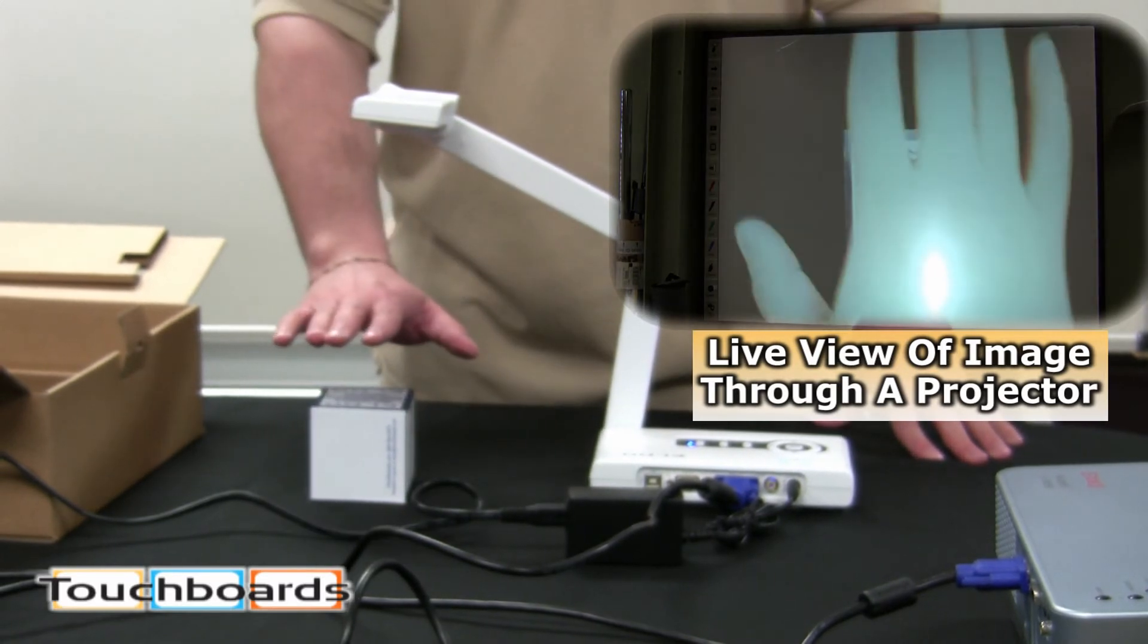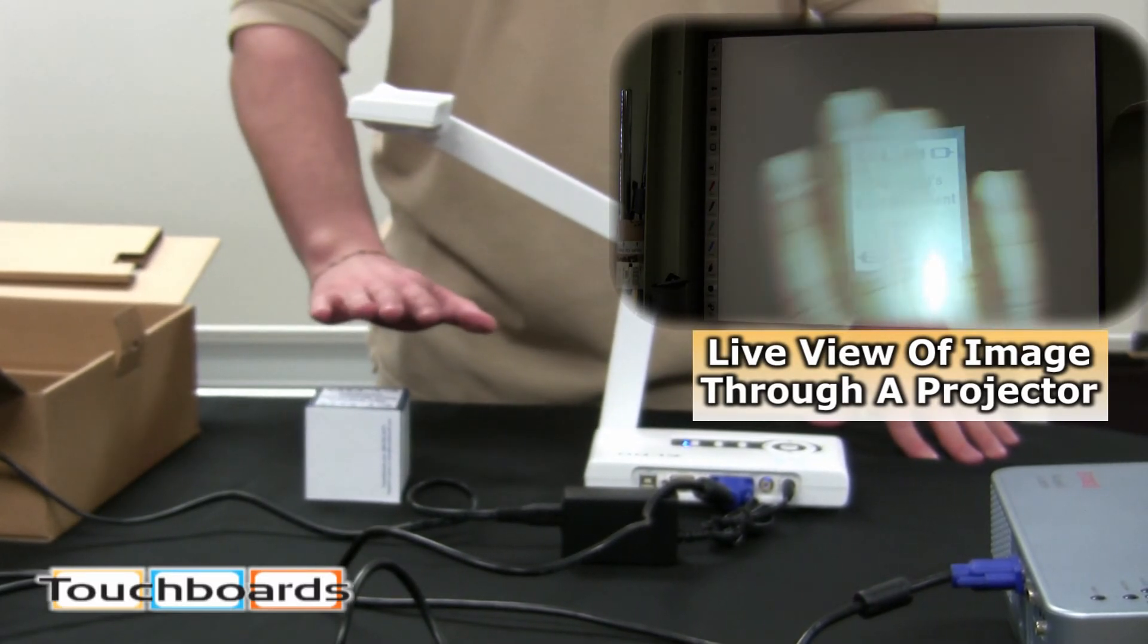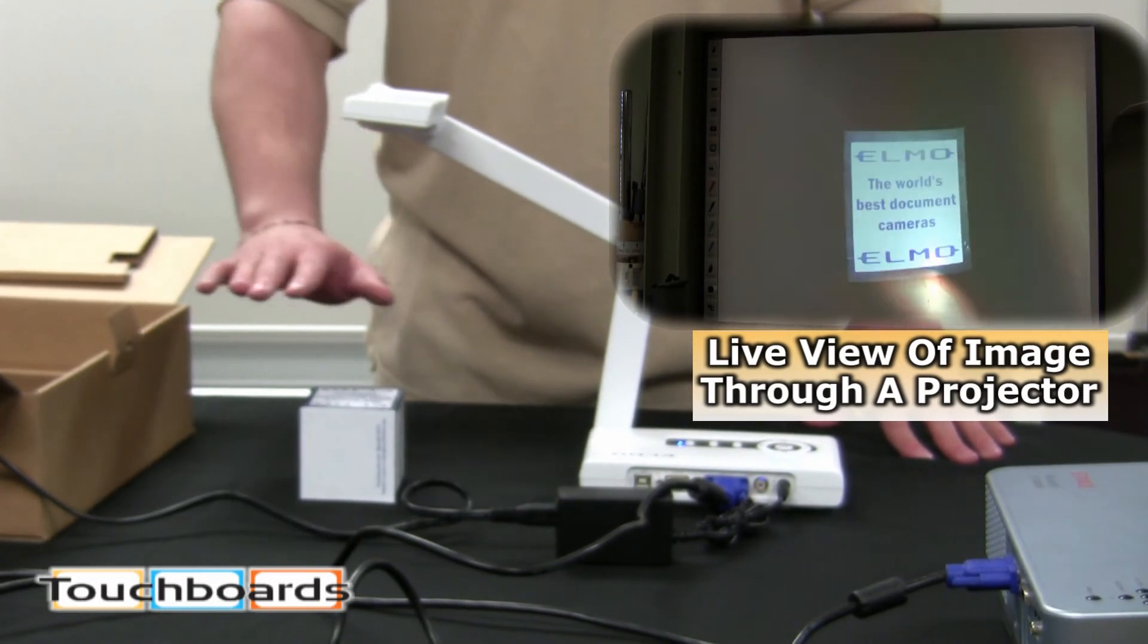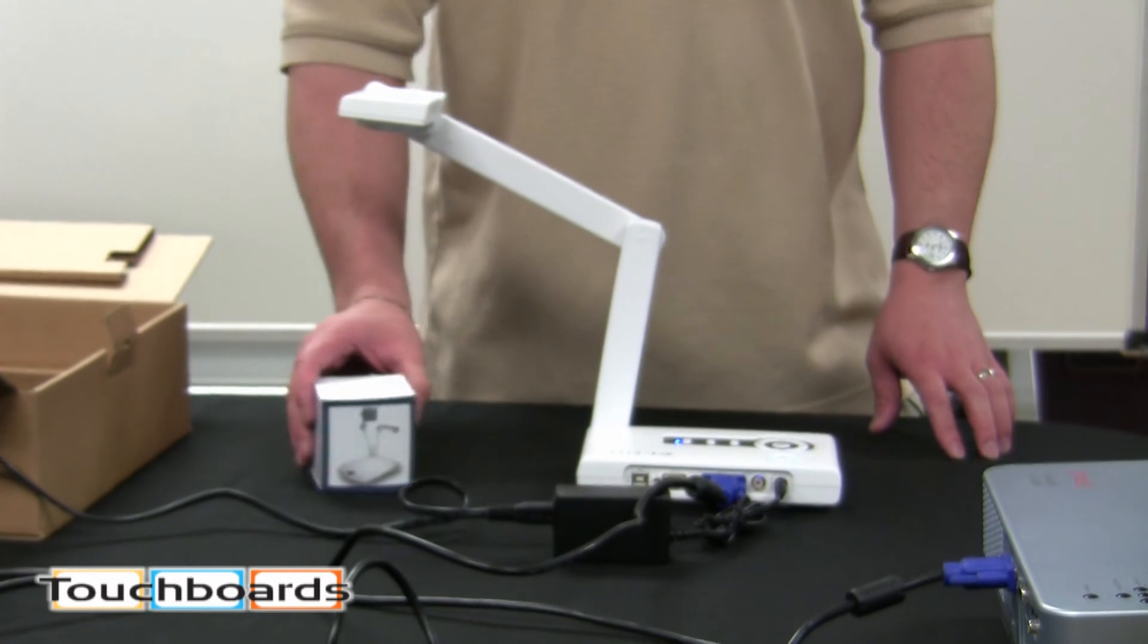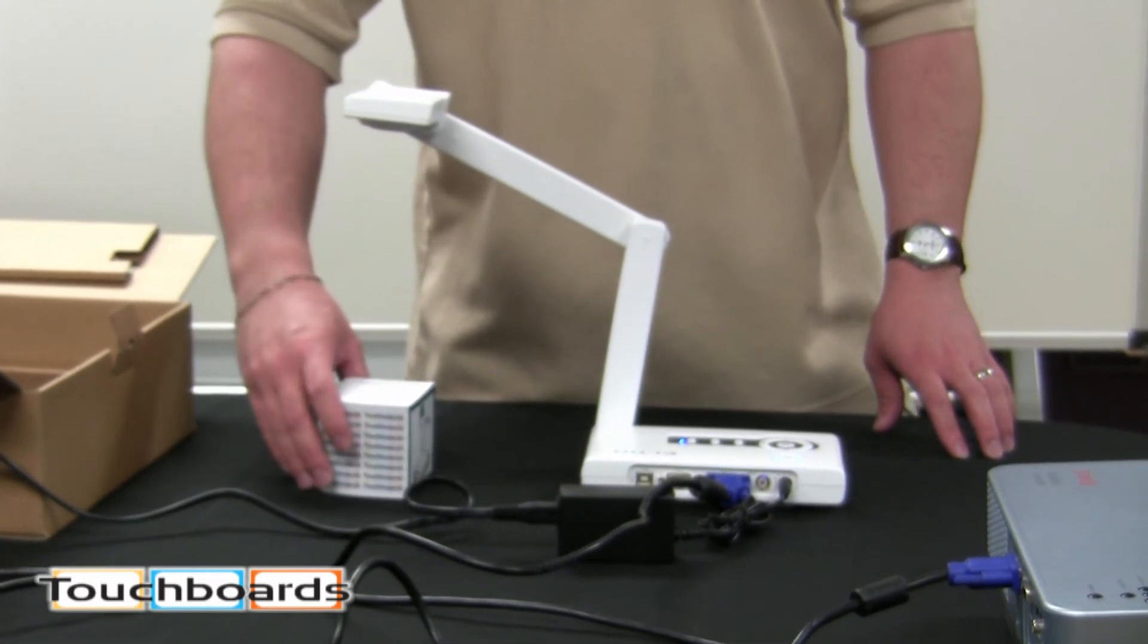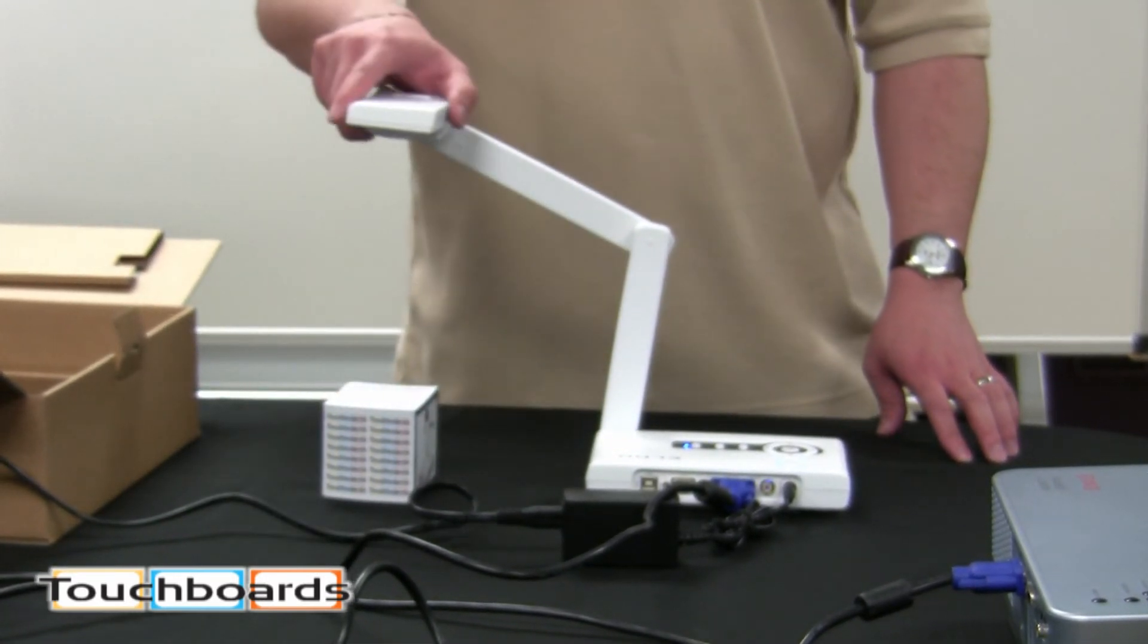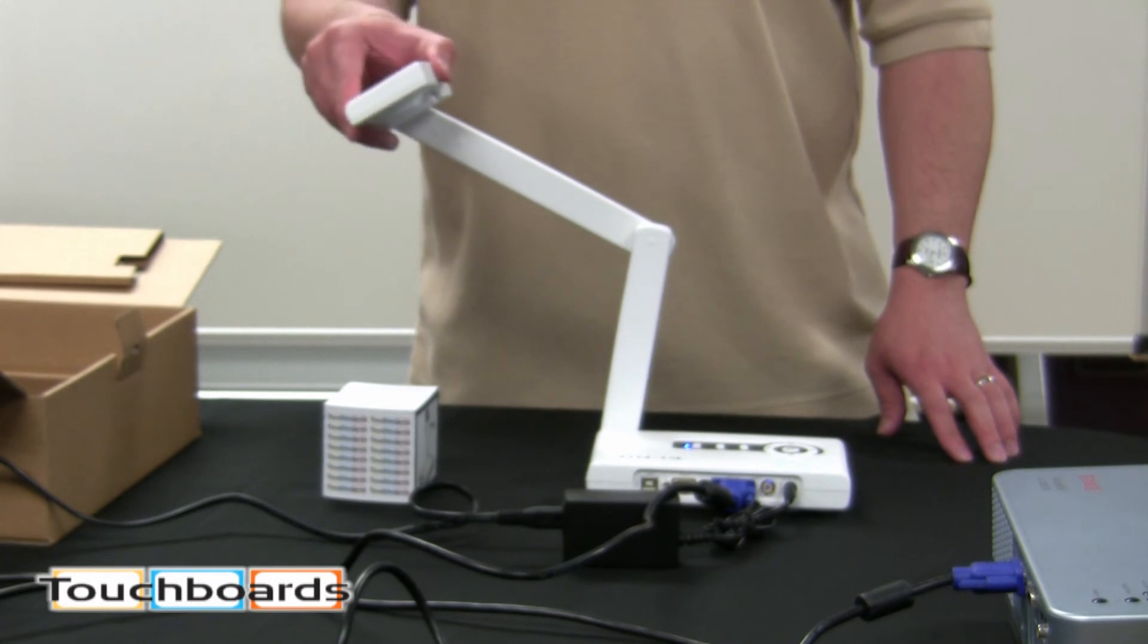Also, again, this is video. You can see if I put my hand under it, you can see it move around. So as you can see from our quick little demonstration here, the CO10 is very small, very easy to use document camera. Got a lot of adjustment.